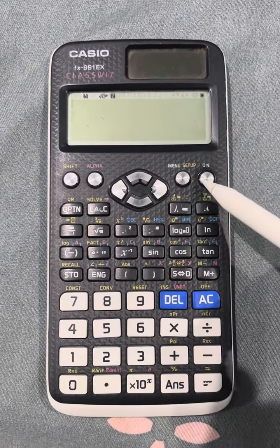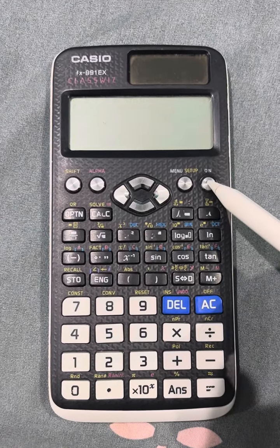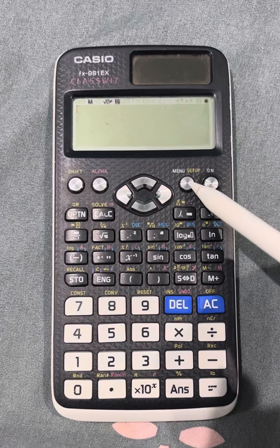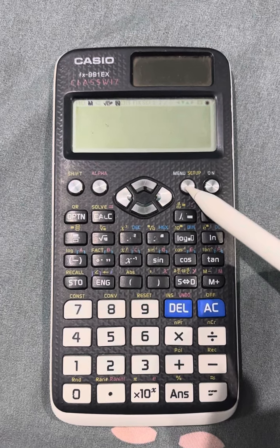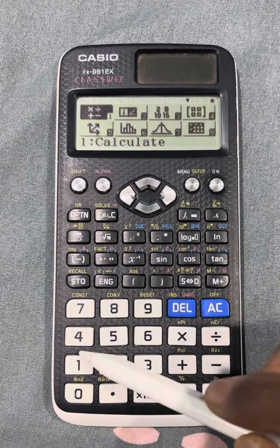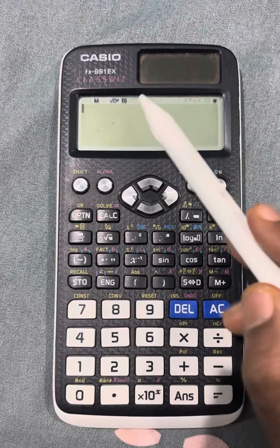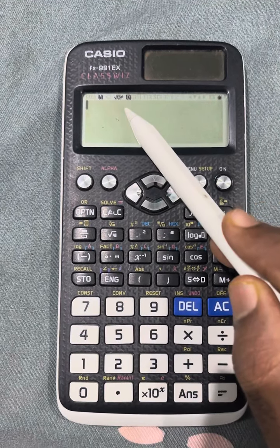After you open the calculator, click the ON button and then reset the mode to 1 so that all your calculations will be in degrees and there will not be any errors.